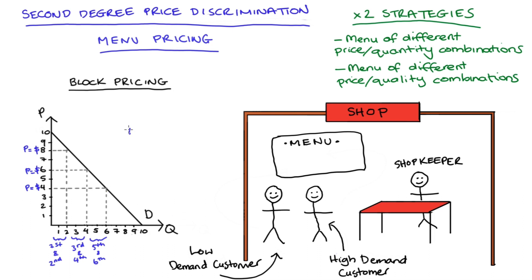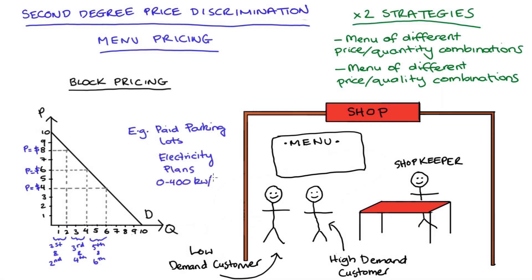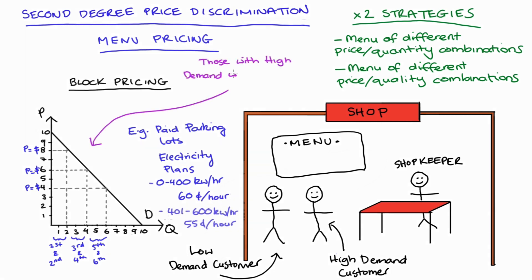I sometimes see this sort of thing in paid parking lots, where the longer I stay, the less each additional hour or time unit costs me. I also see it sometimes in electricity or other utility plans — say for the first 400 kilowatt-hours the charge is 60 cents, from the 401st to the 600th it's charged at 55 cents, and so on. So for those with the demand for it, the firm is potentially capturing more surplus and profit by pricing along the demand curve, decreasing the price for higher blocks and giving those with higher demand an incentive to consume more.